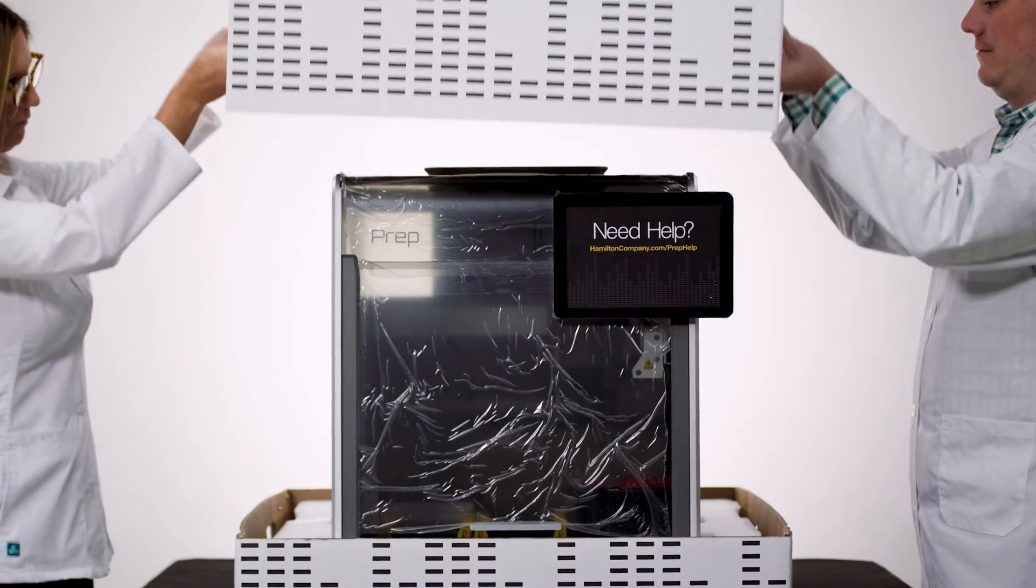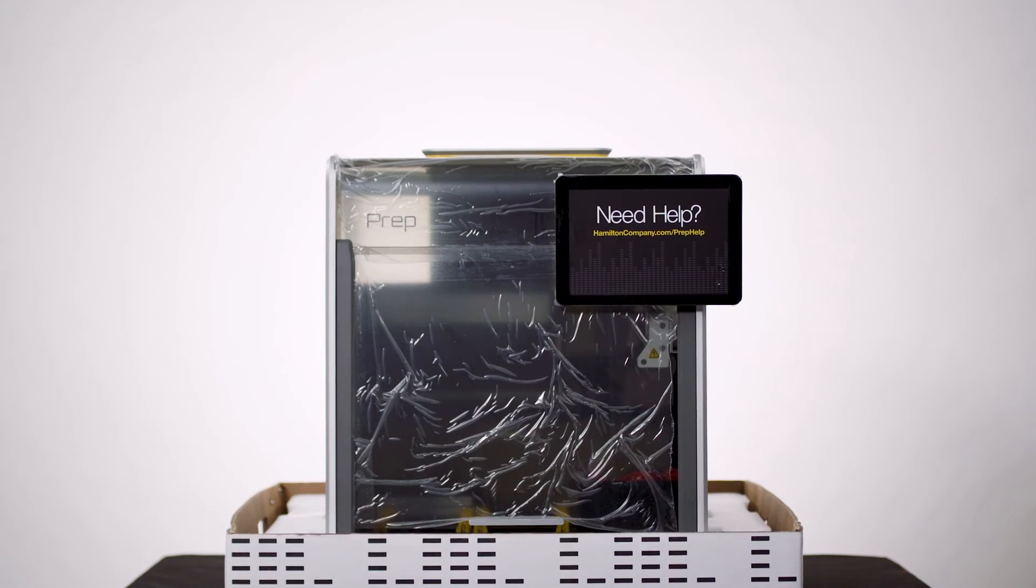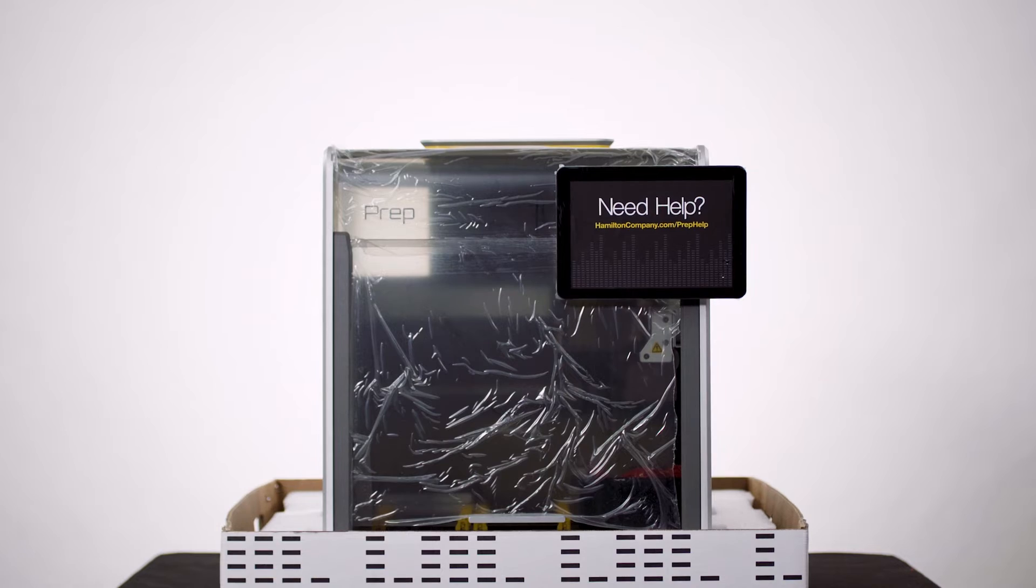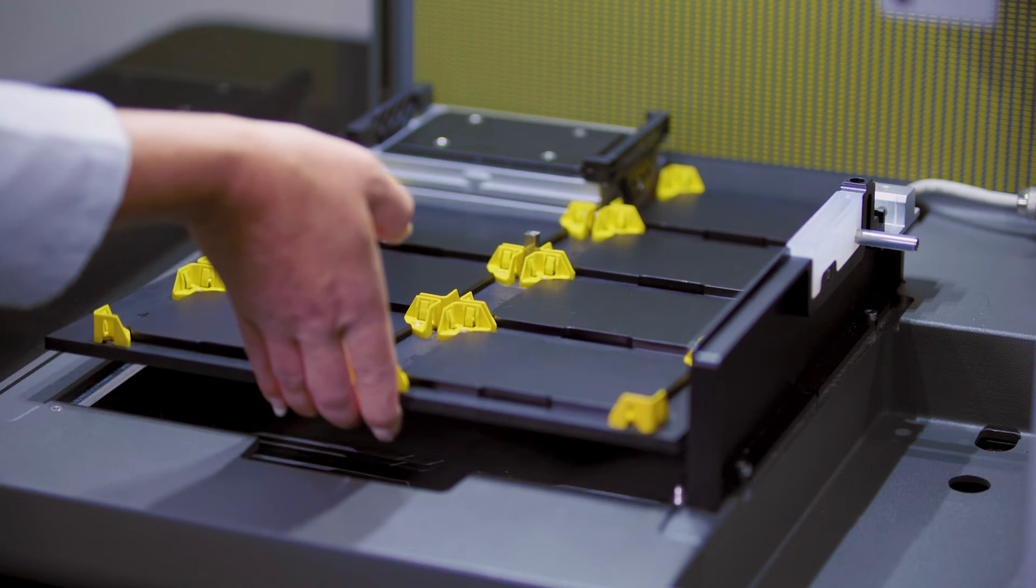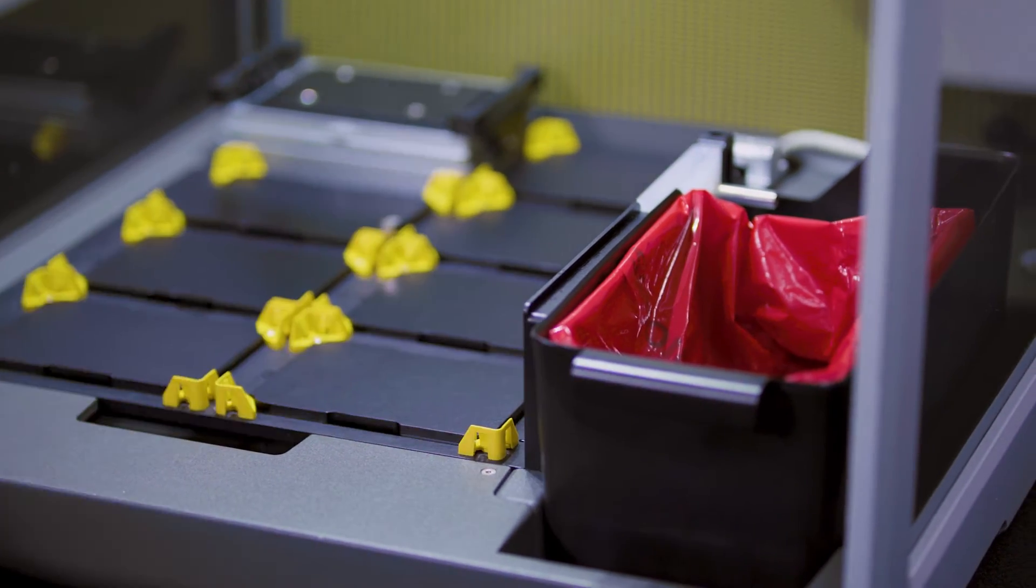The Microlab prep was engineered to be easily installed by the end user. Simply follow the provided instructions to unbox the prep. Once on the bench, install the deck, the waste bin for tips and liquids, core paddles for transports, and the teaching needle for maintenance.